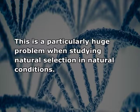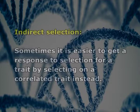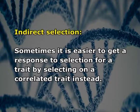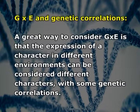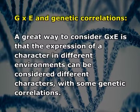The correlated response is given by the formula: CR_Y = i_A · h_YX · r_A = Cov_A / Cov_P × i · h_YX × σ_X. The selection of one trait can cause an apparent selection differential in another trait because of both genetic and environmental correlations, which is a particularly significant problem when studying natural selection. Sometimes it is easier to get a response to selection for a trait by selecting on a correlated trait instead — this is indirect selection, especially when the heritability for the secondary trait is higher or when it is easier or cheaper to measure. A great way to consider G×E interaction is the expression of a character in different environments, which can be considered as different characters with some genetic correlation.